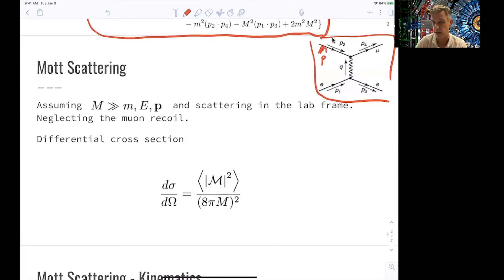The assumption for Mott scattering we are using is that the mass of this particle, the muon, is much heavier than the mass of the electron. It's true that the muon is 200 times heavier than an electron. In Mott scattering, we also make the assumption that the momenta involved are lower than the mass of the heavy particle and that the recoil of the heavy nuclei can be neglected.